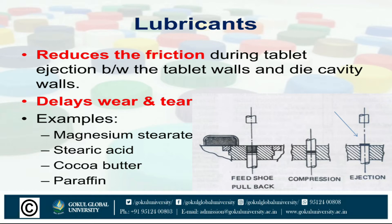Commonly used lubricants are magnesium stearate, calcium stearate, stearic acid and talc. Other materials such as cocoa butter, hydrogenated vegetable oil, liquid paraffin, hard paraffin, waxes and wax-like materials may also be used as lubricants to prevent adhesiveness to the surface of dies and punches.